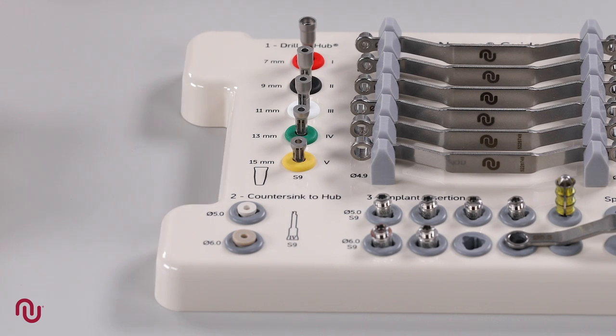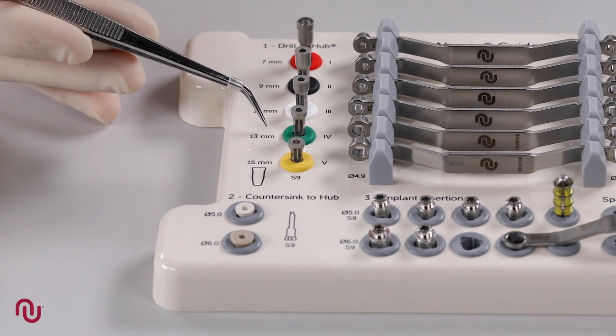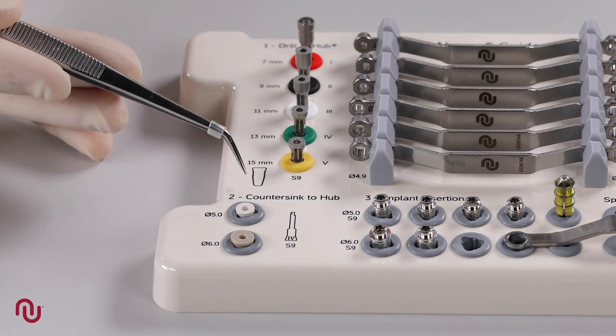If countersinking, then we always use Drill Hub 4, green, together with the countersink conduit.